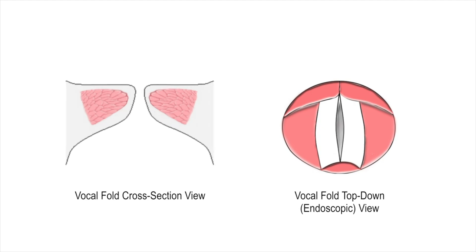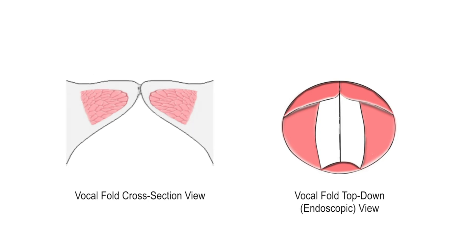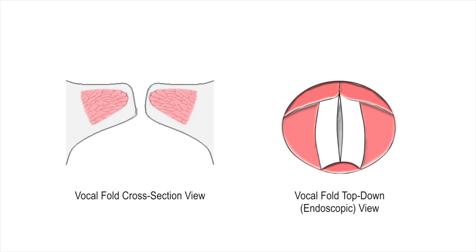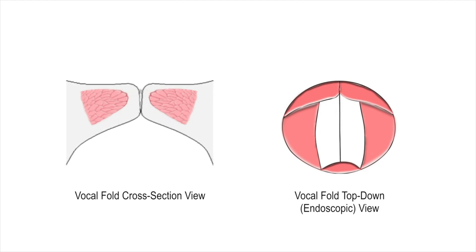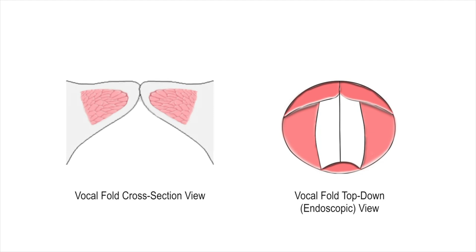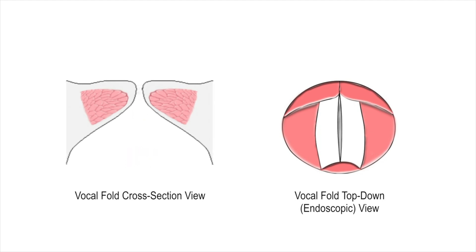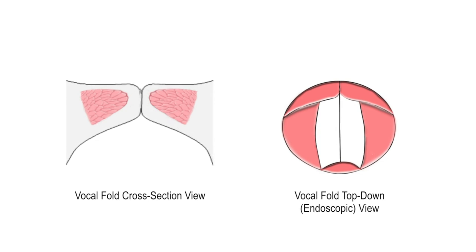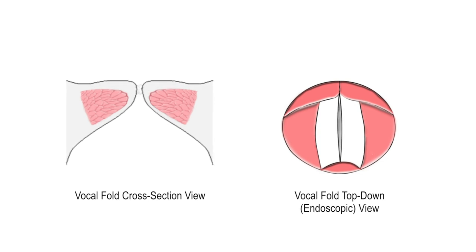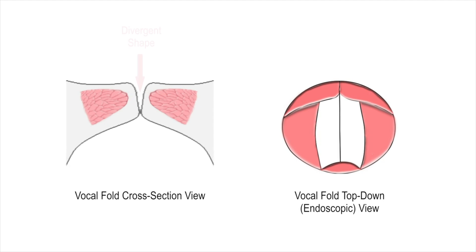Furthermore, when the vocal folds vibrate against each other, there is both a horizontal and vertical component. There is a mucosal wave that starts at the lower margin that opens first, resulting in a convergent shape due to tracheal air pressure. When the upper margin opens up, releasing a puff of air, the lower edges of the vocal fold covers come back together, resulting in a divergent shape. The cycle is then repeated.